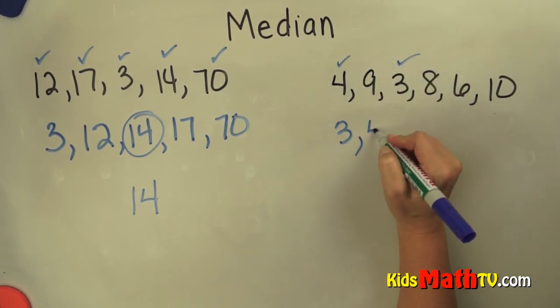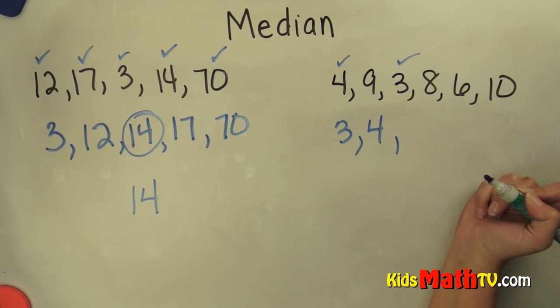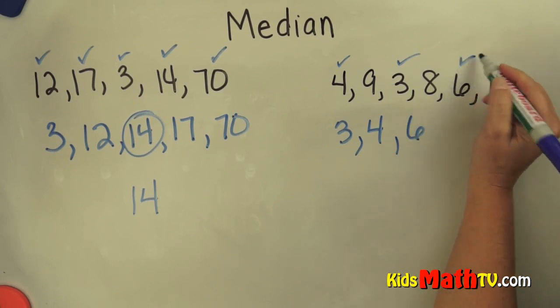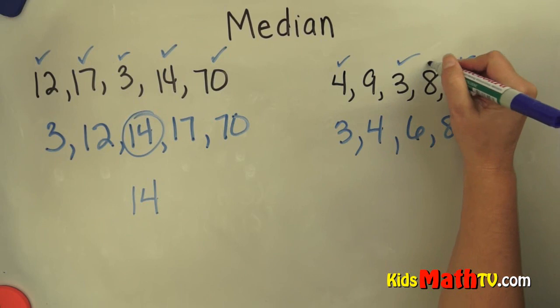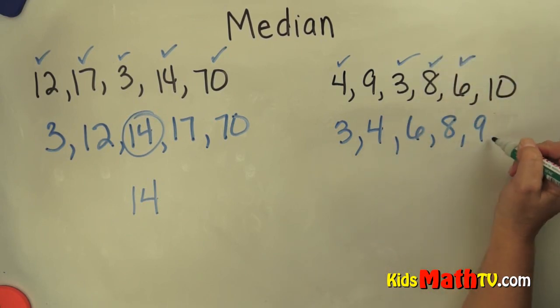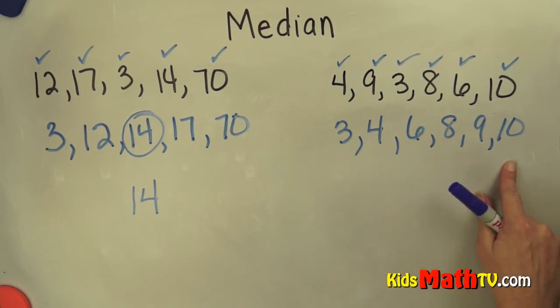We have a 4, and then it looks like 6, and 8, and 9, and 10. So I have all the numbers, and they are in order from least to greatest.